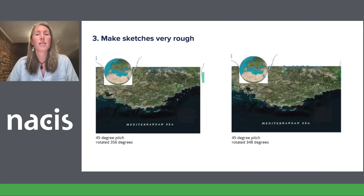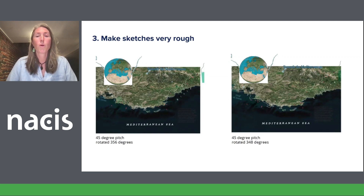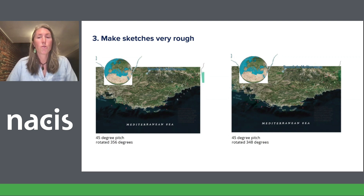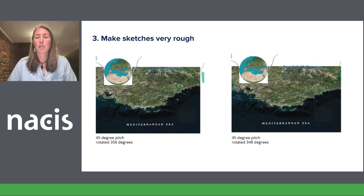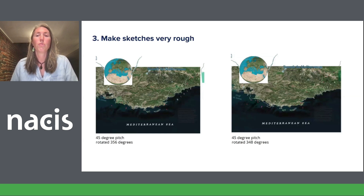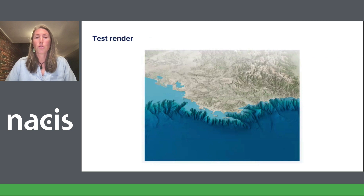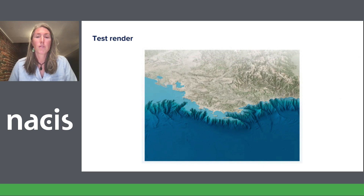The next tip is one that Eric taught me: when you're rendering these scenes, it's important to keep your sketches pretty rough. You don't want to be working with full resolution data because that could take a lot of time to render the scene, and you also don't want people focusing on the details of the render when you're really just trying to line up the correct pitch — the degrees that you rotate the scene and things like that. These are a couple of sketches that Eric and I passed back and forth early on, and by having these rough sketches, when he finally ran a test render it was already looking pretty close to the finished product.